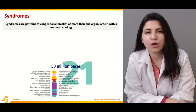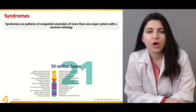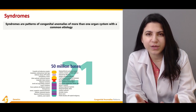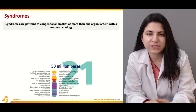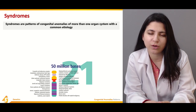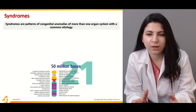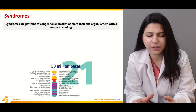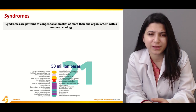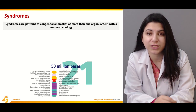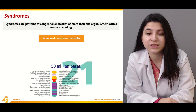Syndromes are basically a pattern of congenital anomalies of more than one organ system with a common etiology. Whenever we are talking about multiple organs that may be involved leading to an anomaly, we term it a syndrome. The key requirement is that multiple organs are involved and there must be a common etiology to differentiate a particular congenital anomaly as a syndrome.